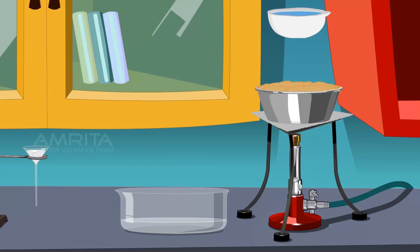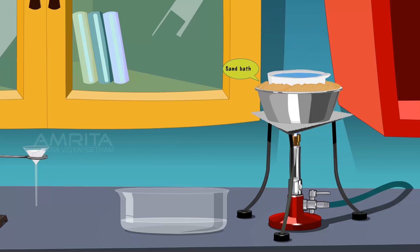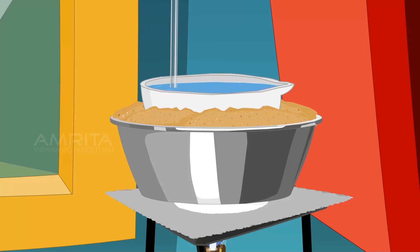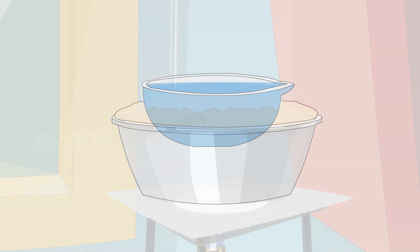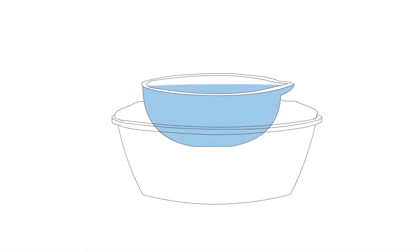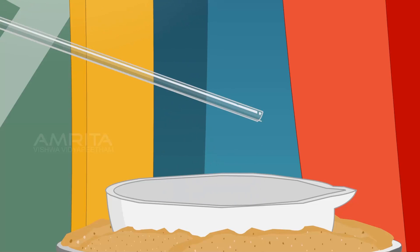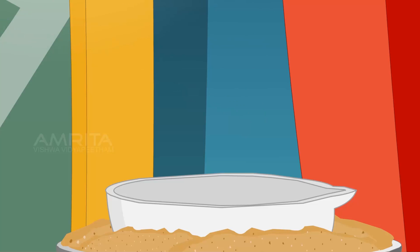Heat the solution in the china dish on the sand bath while stirring using the glass rod to avoid crust formation on the sides of the dish. Don't allow the solution in the dish to boil. Continue heating till the solution is reduced to about one third of its original volume. Take out a drop of the solution using the glass rod and cool it by gently blowing on it. The appearance of tiny crystals on the glass rod shows that the crystallization point has been reached.